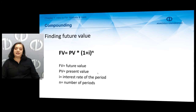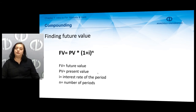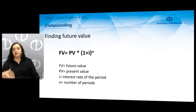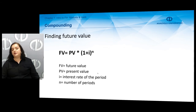Speaking of interest rates, it is important to be able to determine future values of present values and present values of expected future amounts. If we invest some amount of money today and wonder how much it will accumulate at some future date, we can find this by compounding. Compounding is finding the future value of some present value using an interest rate for some number of periods. Future value equals present value times one plus the interest rate, raised to the power n, which is the number of periods.